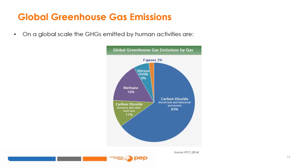At a global scale, the GHGs emitted by human activities include carbon dioxide, CO2 — where fossil fuel use is the primary source, though it can also be emitted from deforestation, land clearing for agriculture, and degradation of soils, while land use can also remove CO2 through reforestation and soil improvement — and methane, CH4, where agricultural activities, waste management, energy use, and biomass burning all contribute to CH4 emissions.